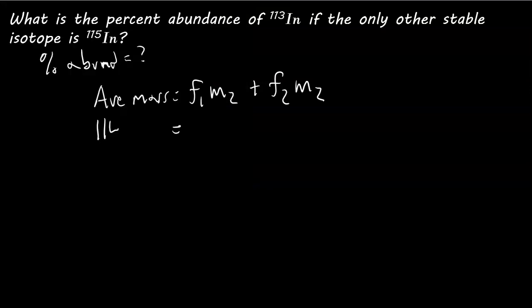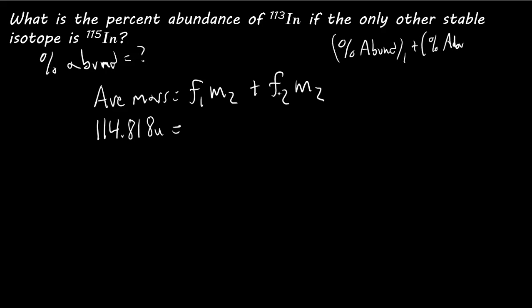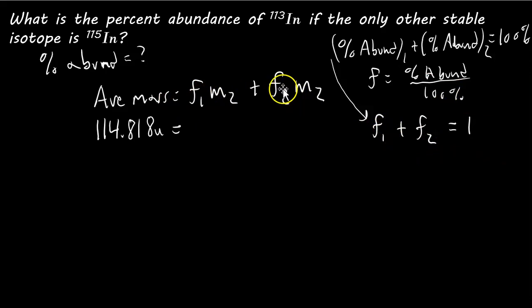Now, we don't know the fractional abundance of either of them, do we? But since there's only two stable isotopes, then the total abundance of both isotopes has to equal 100%. So, percent abundance of the first one plus the percent abundance of the second one has to equal 100%, because there's only two isotopes.